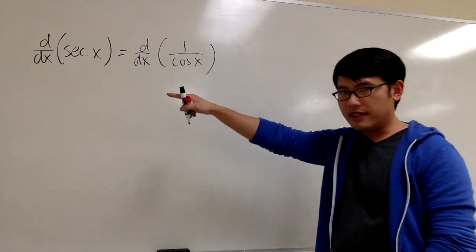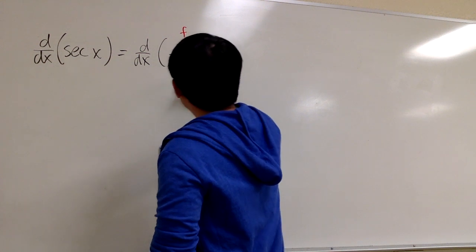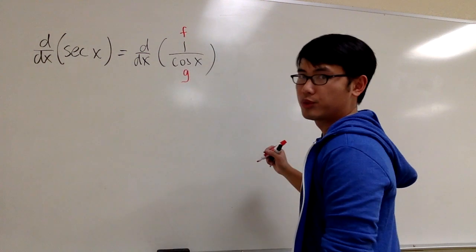And by writing secant x as 1 over cosine x, all we can do is label the top as f, the bottom as g, and we can use the quotient rule.